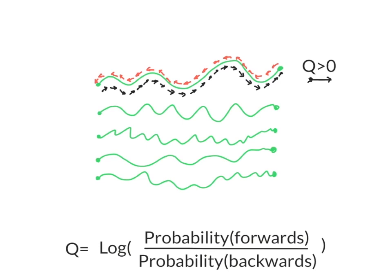Most of the time this entropy is positive. The arrow of time points forwards. Sometimes the arrow of time seems to point backwards.